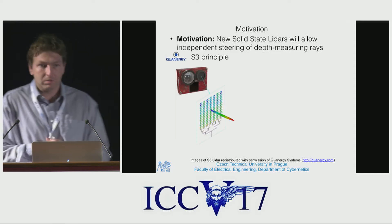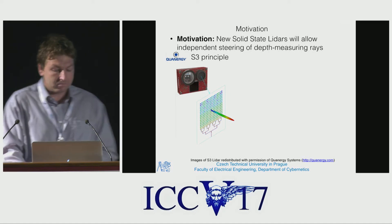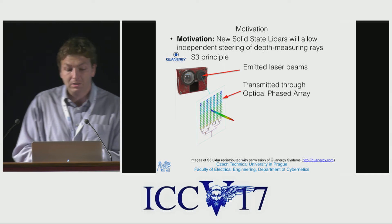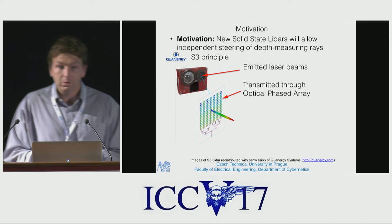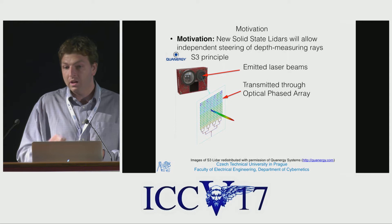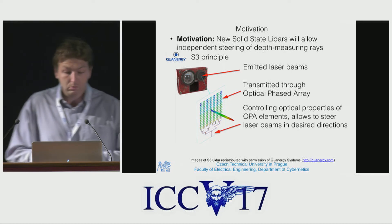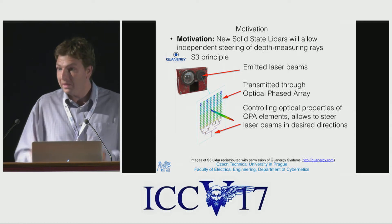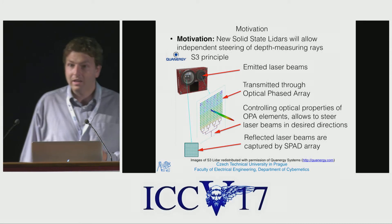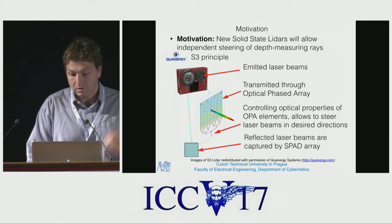The principle of these devices, as far as I understood, is as follows. The laser beam is emitted, split, and transmitted through an optical phased array. This optical phased array consists of surface elements which allow adjusting its optical properties. Controlling these optical properties allows steering laser beams independently into desired directions. The laser beams are then reflected from the scene and captured on a sensor array using some optics.